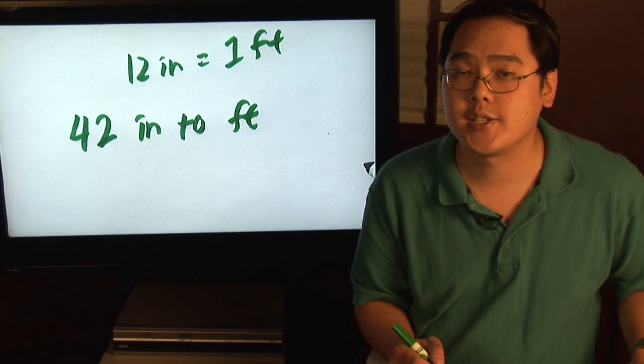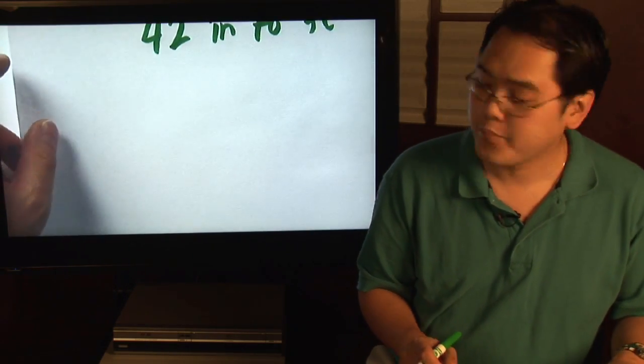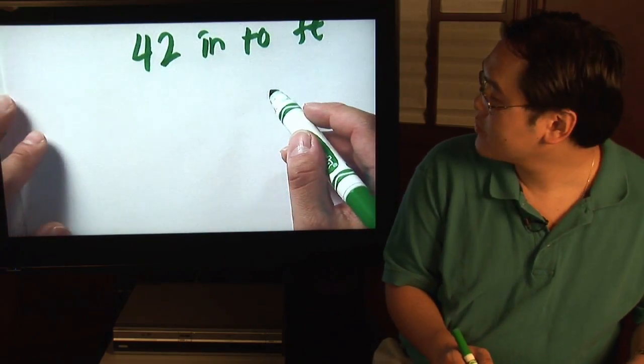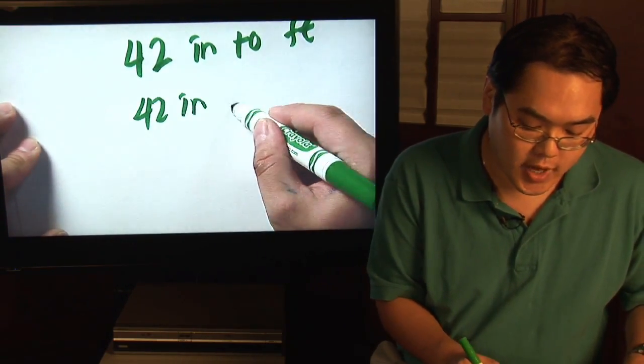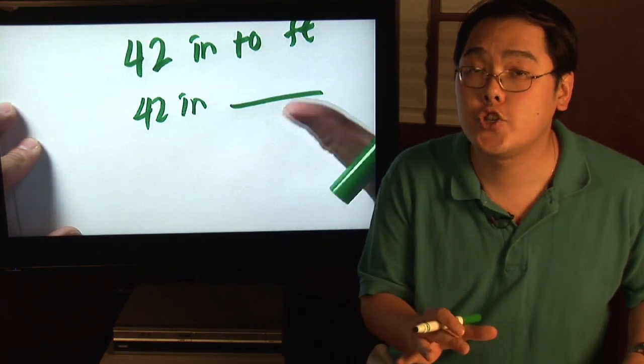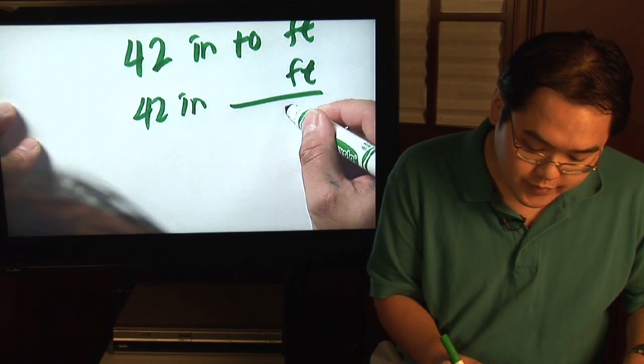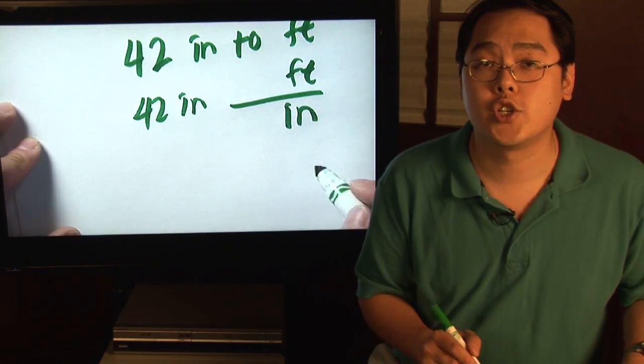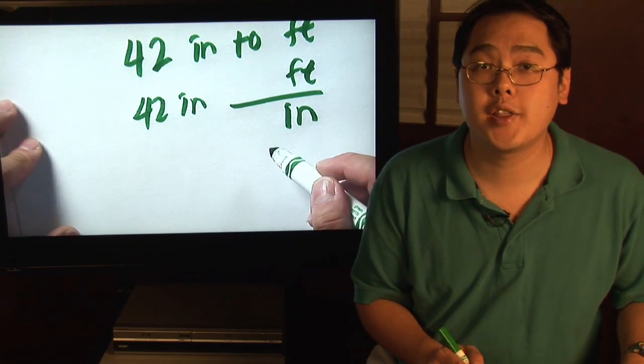you need to use what's called dimensional analysis, in other words, with unit fractions to figure this out. So here we go. You're starting off with 42 inches, and you want to convert it to feet. Now because you want to convert to feet, feet goes on top. Because you want to convert from inches, the inches would be at the bottom. Now again, you plug in the numbers where they belong.